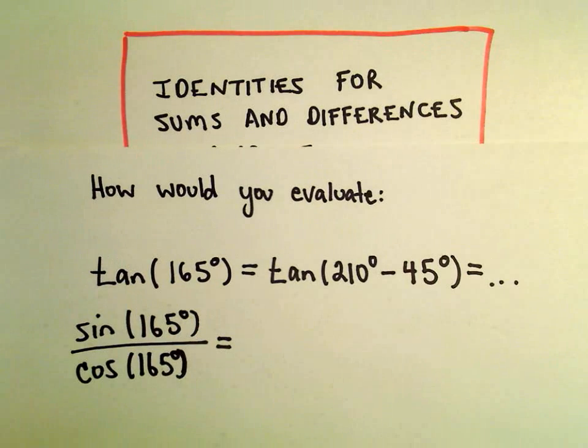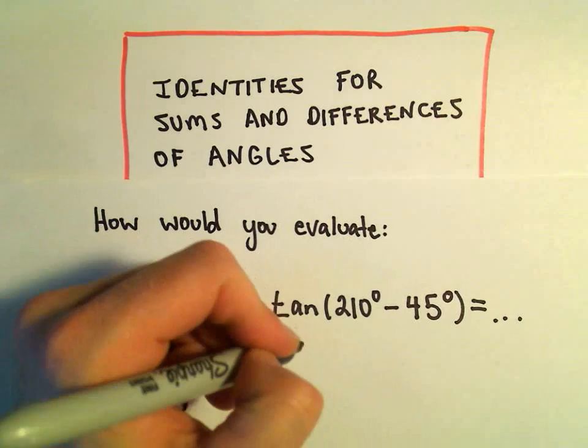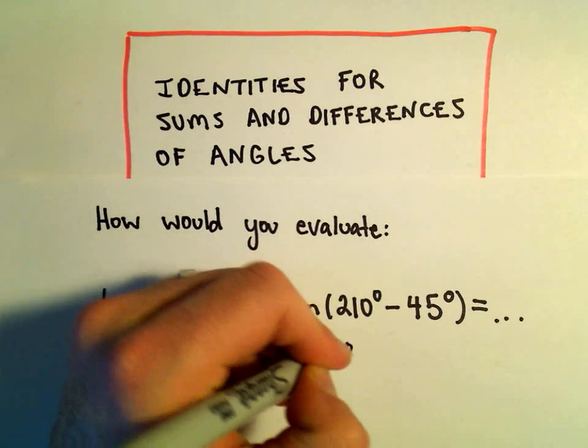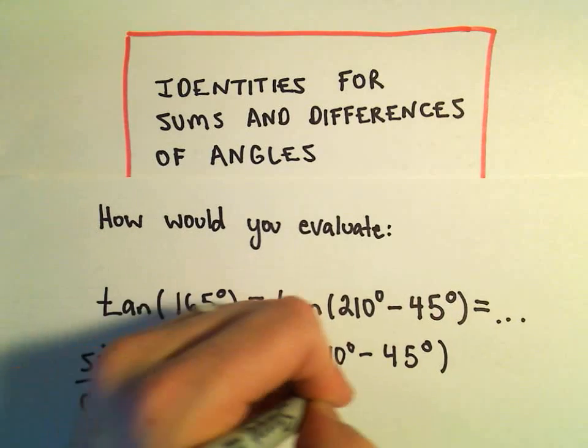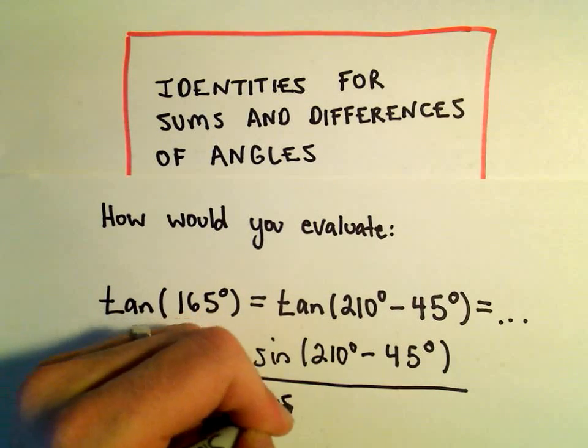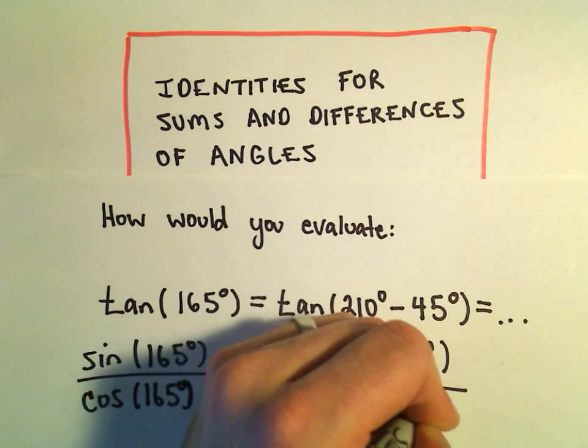But now we could simply use our identity on this. So we can write the numerator as 210 degrees minus 45 degrees over cosine of 210 degrees minus 45 degrees.